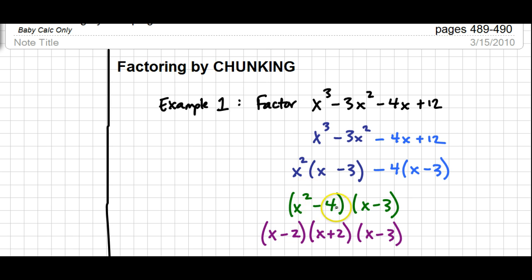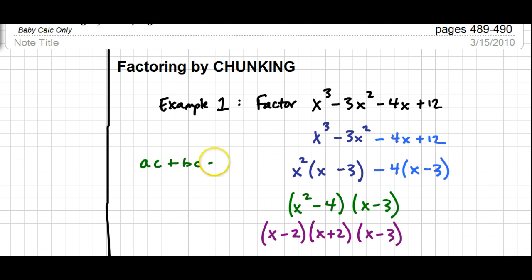Hopefully you recognize that x² minus 4 can be factored further as a difference of squares, so that factors into (x+2)(x−2). A common question is: why isn't x minus 3 in there twice? Think of it like the distributive property — if you have ac plus bc, you factor out c and get (a+b). C gets pulled out once, and you see what's left. Similarly, x minus 3 gets factored out only once, and what's left gets put together.